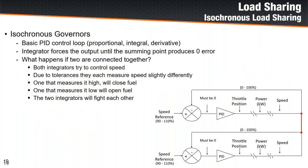One challenge with isochronous load sharing is that each generator has a PID control loop trying to control engine speed. When we parallel generators together, we connect the speed outputs to a common bus. The PID integrators will try to drive fuel until there's a zero error input. With measurement tolerances and component variation, the generators would naturally fight each other in this configuration, with each PID trying to take control.